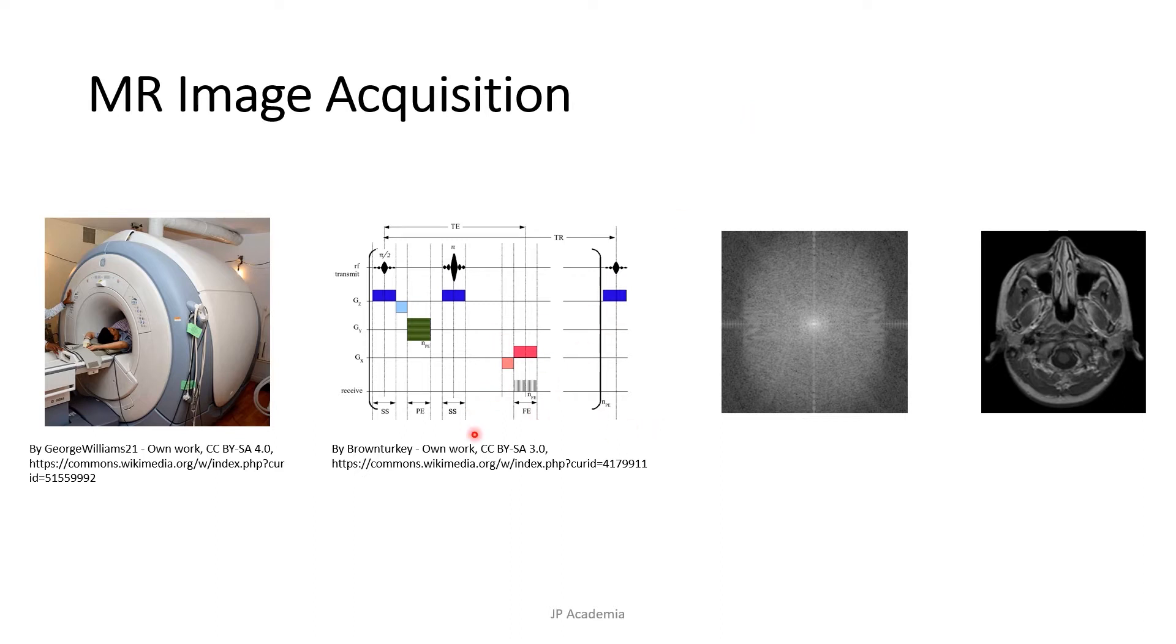Example is a T1-weighted scan, which shows tissues with high fat content such as white matter of the brain, while a T2-weighted scan shows those filled with water such as the cerebrospinal fluid. These compartments appear bright in those types of images.